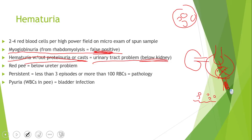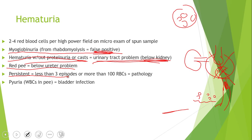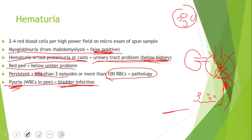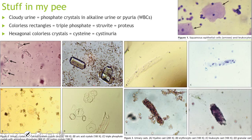If the urine is literally just red, you're thinking the problem is below the ureter, very low down. Persistent hematuria is defined as more than three episodes or more than 100 red blood cells — 90% of the time that means there's a pathology. Pyuria — white blood cells in the urine — suggests some kind of infection, since white blood cells respond to infections.